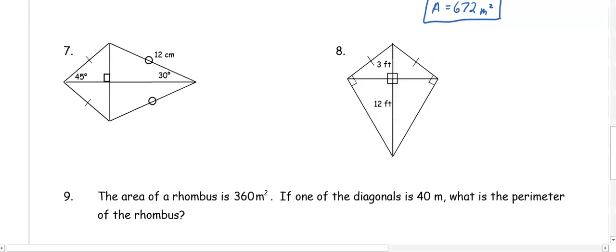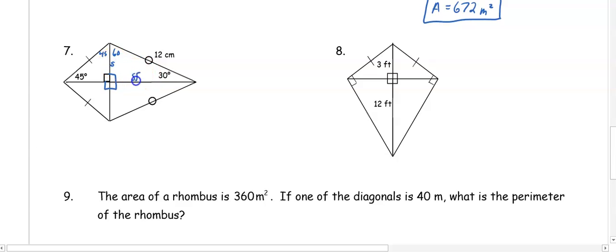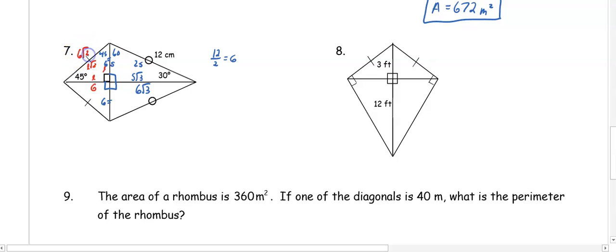In number seven, we have a kite with special right triangles, since all angles at the center are 90 degrees. We have a 30-60-90 triangle and a 45-45-90 triangle. In the 30-60-90 triangle, the sides are s, s root 3, and 2s. To get s, we divide 12 by 2 to get 6. So the shorter diagonal is bisected into 6 and 6, and part of the longer diagonal is 6 root 3. For the 45-45-90, the sides are L, L, and L root 2, and we know L is 6.